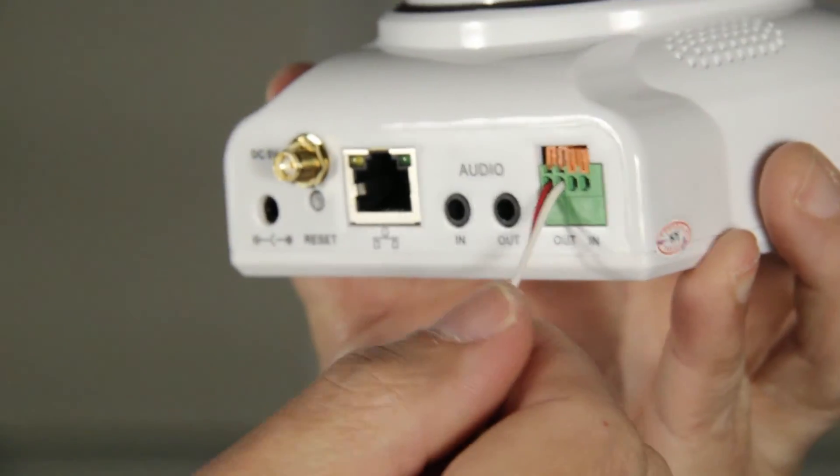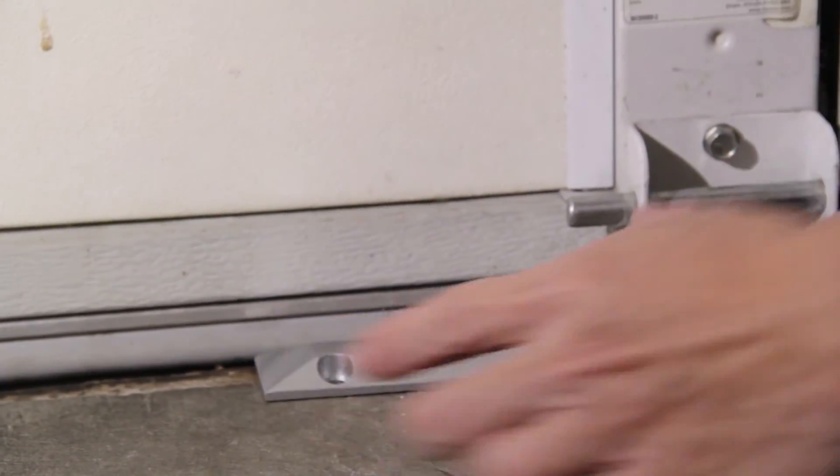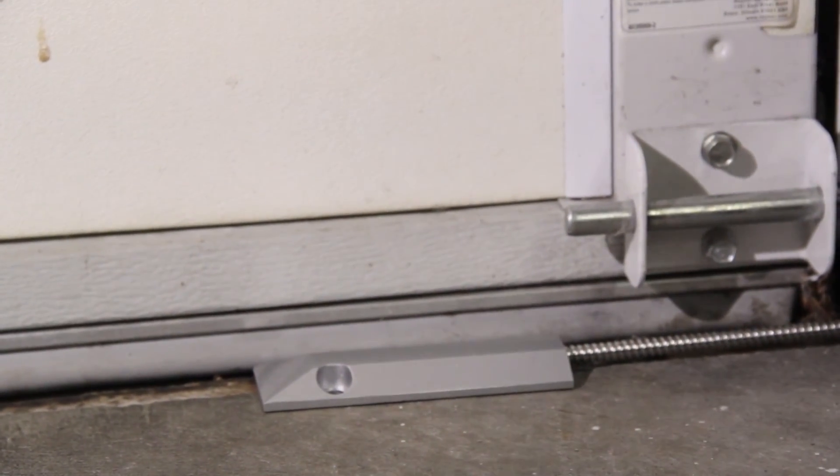Now you can set the NepoSmart aside, and we'll move on to the magnetic switch. The magnetic switch has two parts, the sensor and the magnet.